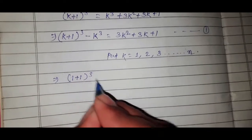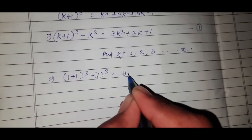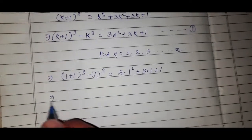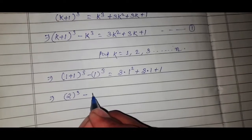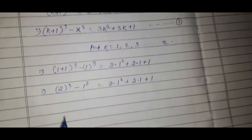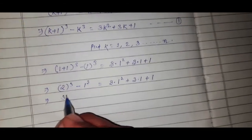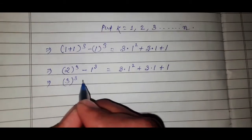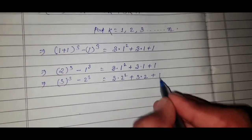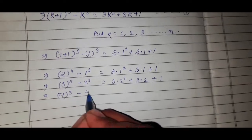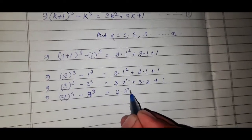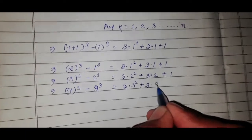(1+1)³ - 1³ = 3(1²) + 3(1) + 1. Then (2+1)³ - 2³ = 3(2²) + 3(2) + 1. Then 3(3²) + 3(3) + 1, and so on, continuing for each term up to n.